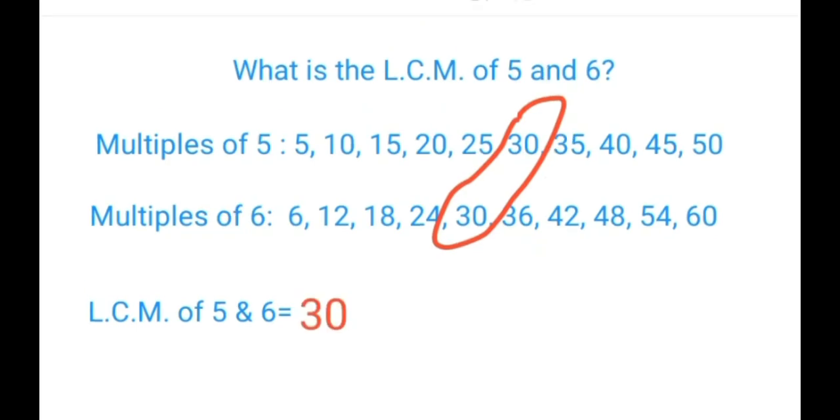Although this method is quite easy, because all you need to do is list the multiples and then pick out the smallest one that is common in both sets, in some cases you have to find the LCM of very large numbers. It is sometimes difficult to list out all the multiples of those numbers. So let me move into another way of finding the LCM of two numbers.